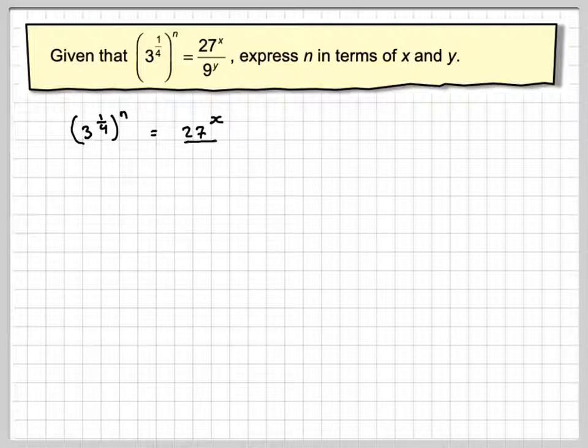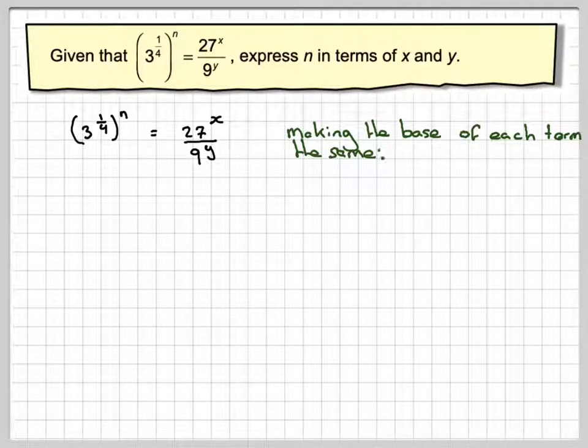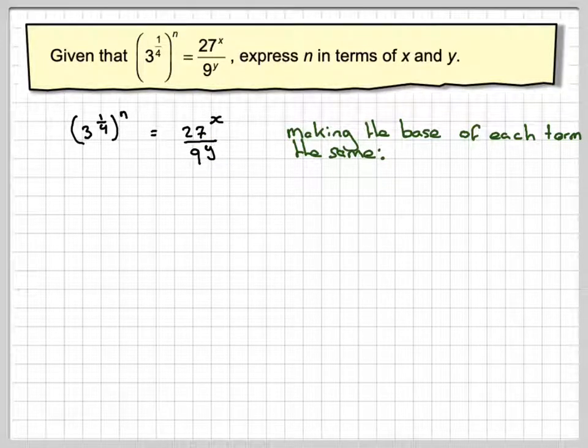Right, so in order to do that, we've got to make the base the same on each side. We're going to make the base for each term to be the same. Now the clue is that's 27, that's 9. They're all powers of 3. And here we've got a 3 on this side. So we'll leave that 3 to the quarter to the n.